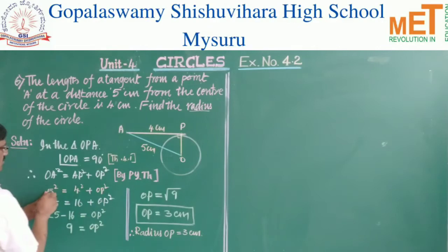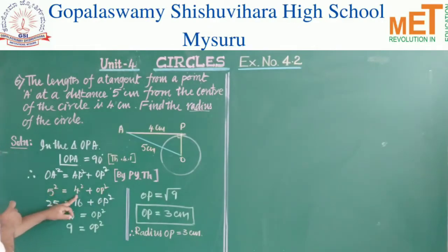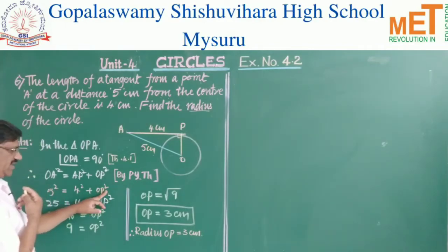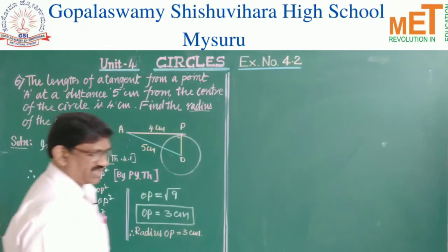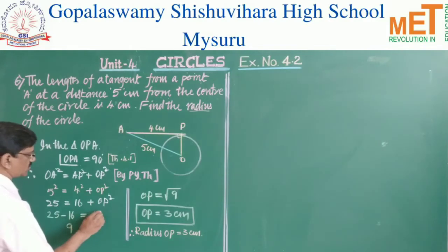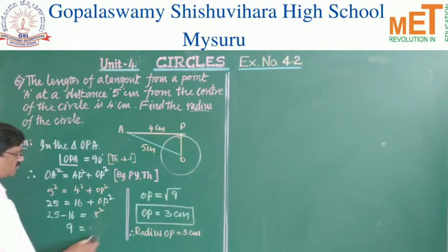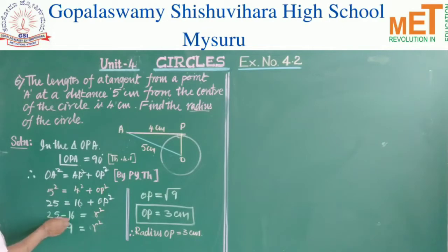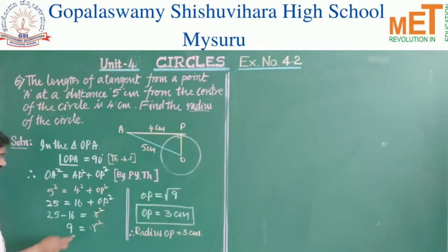Substituting the values: OA = 5 cm so OA² = 5² = 25; AP = 4 cm so AP² = 4² = 16; OP = r (radius). Therefore 25 = 16 + r², which gives r² = 25 − 16 = 9.